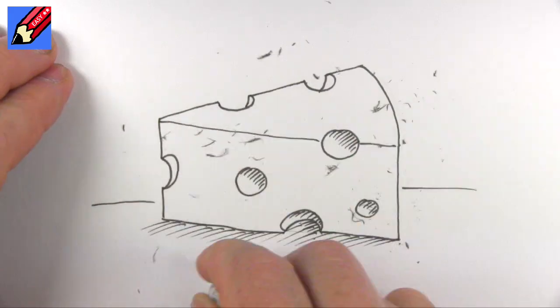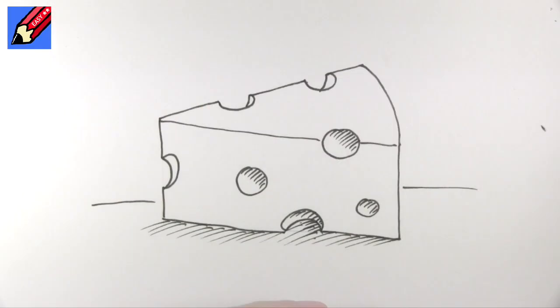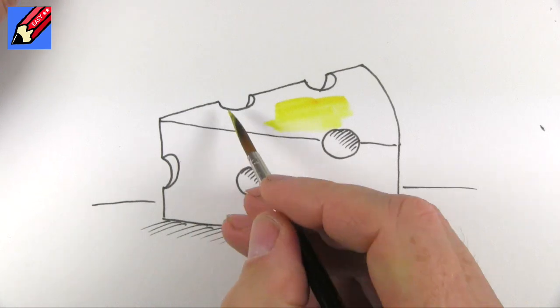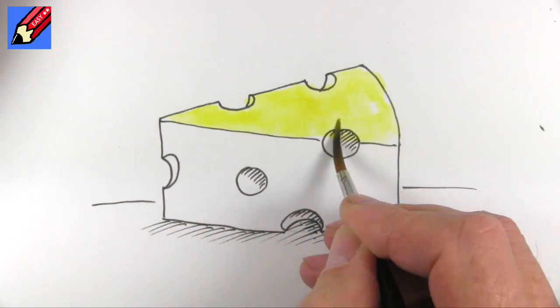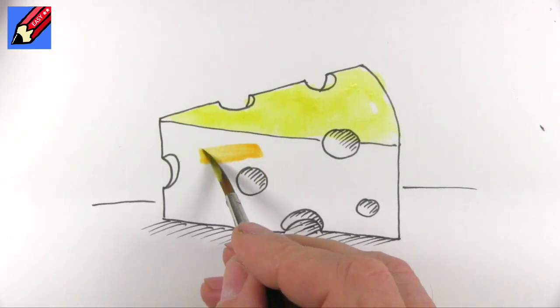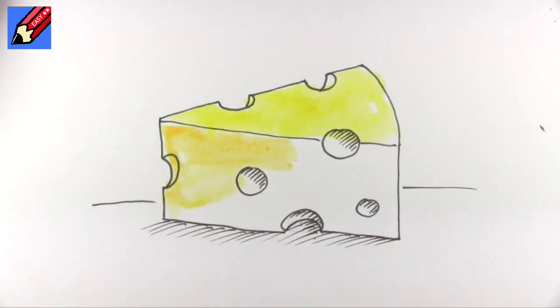When you're sure the ink is dry, you can erase those pencil lines. And I'm going to paint it cheesy yellow and I'm going to paint it bright yellow on the top like that. And a slightly dirtier yellow on the bottom because that's where the shading is.